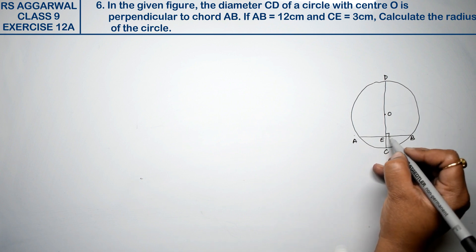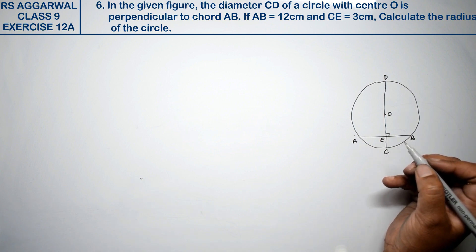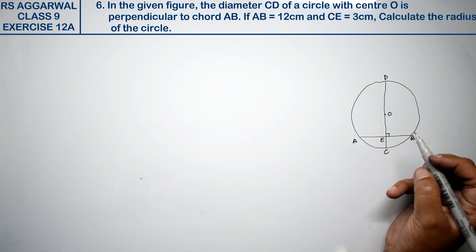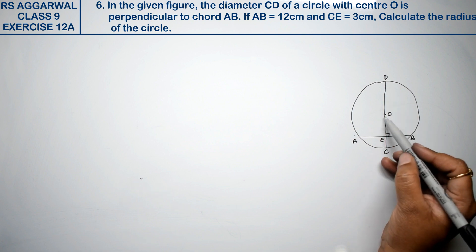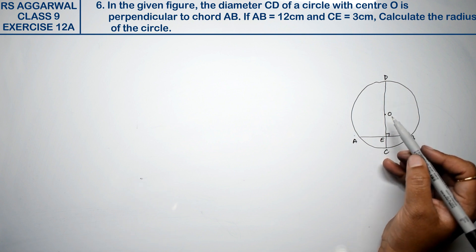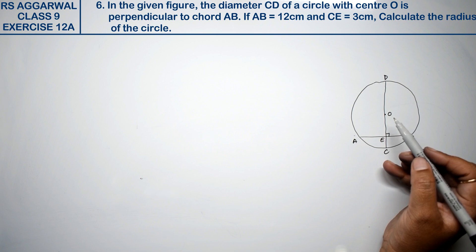In the given figure, the diameter CD, what is the diameter that is located in the center? CD of a circle with center O is perpendicular to the chord.